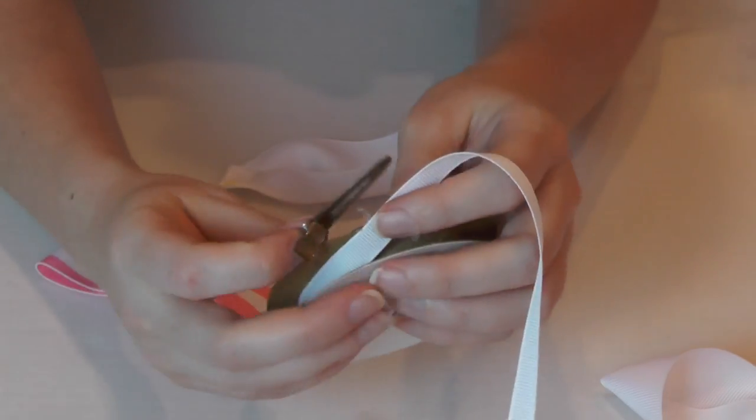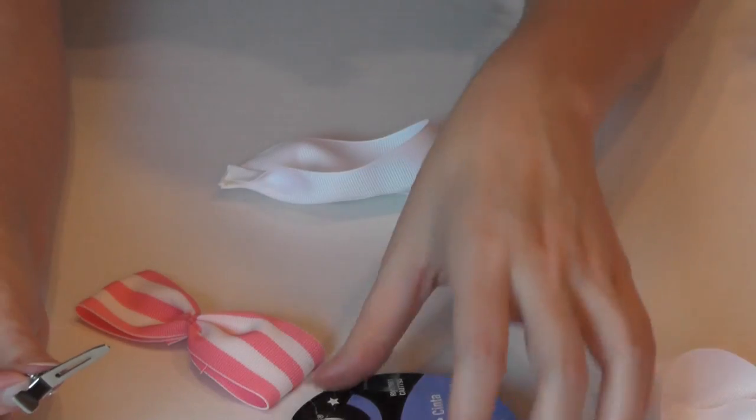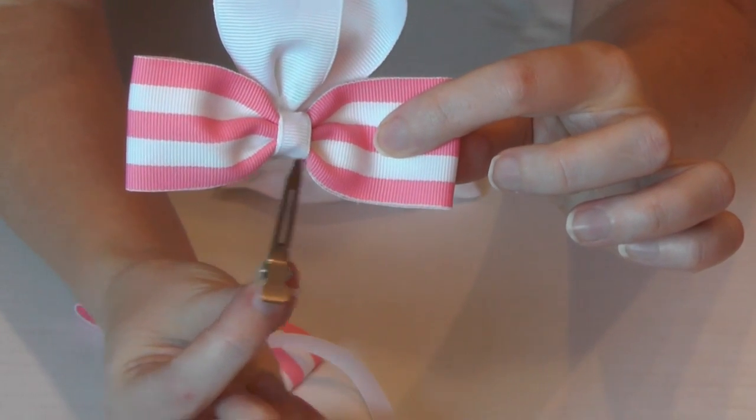All right, the next step I'm going to do is I'm going to secure my clip to my bow with a little 3 1⁄8 inch white ribbon. Just like we did to this one. There's the 3 1⁄8 inch.